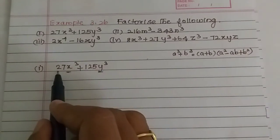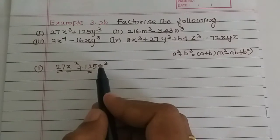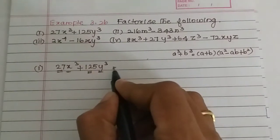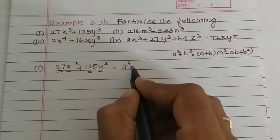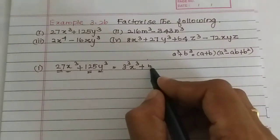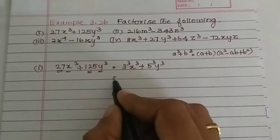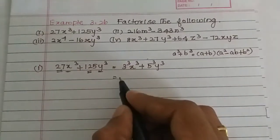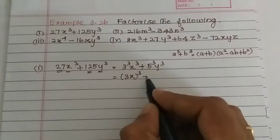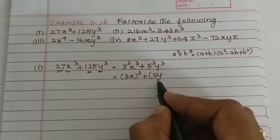We will try the coefficients for the cube. Now 27 is 3³, so 3³ times x³. Plus 125 is 5³, so 5³ times y³. Since the cube is common, 3x is the whole cube and 5y is the whole cube.